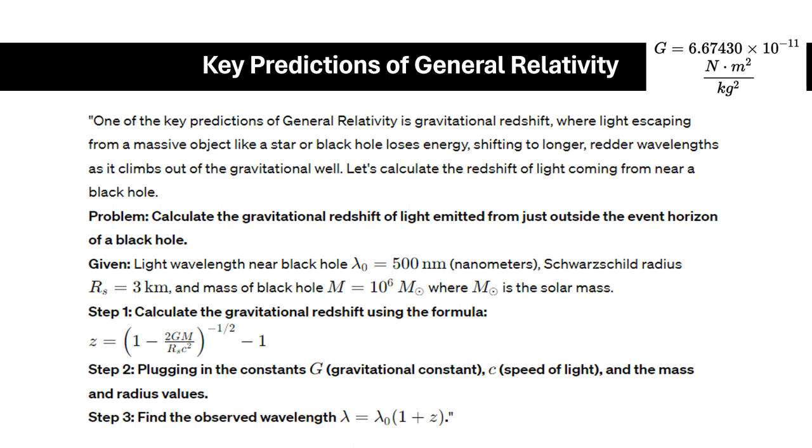Step 2: Plugging in the constants—the gravitational constant G (you can look it up), the speed of light c, and the mass and radius values given here. You can calculate this on your scientific calculator and write the final answers, as well as the given, what is asked, and the solution in your physics notebooks.